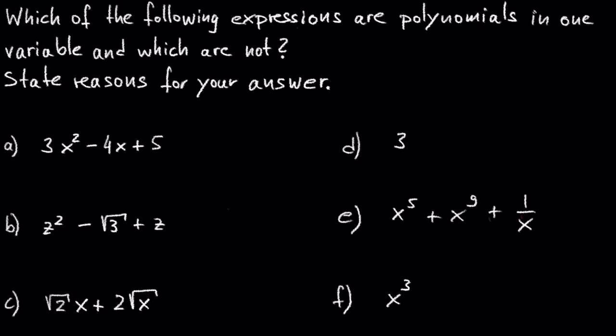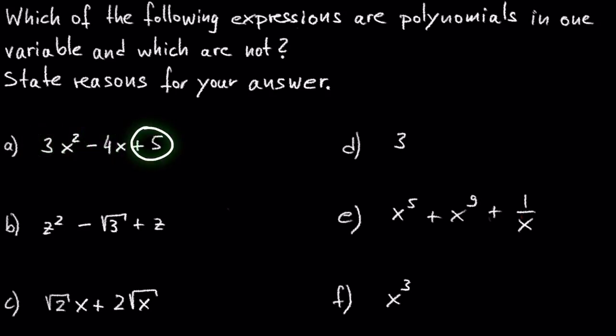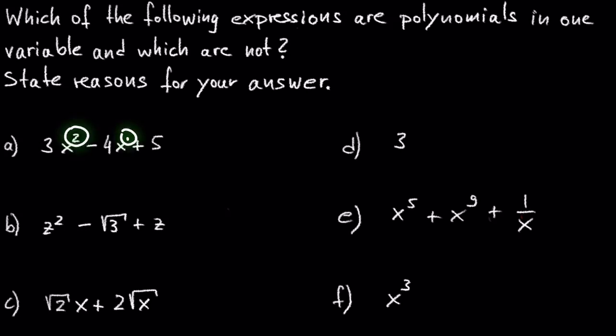In A we have 3x squared minus 4x plus 5. The coefficients 3 and negative 4, and the constant term 5, are real numbers. We also have one variable x. The exponents of the variable x are 2 and 1, which are whole numbers. So this is a polynomial.